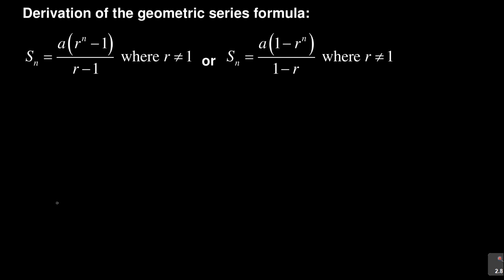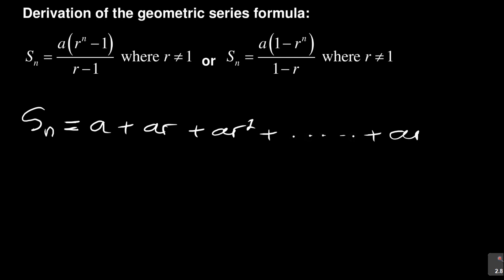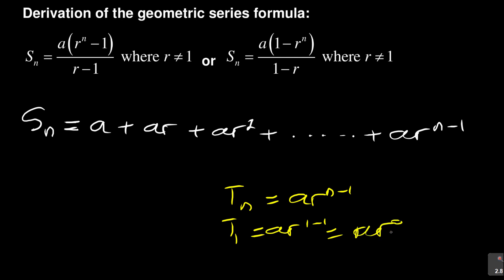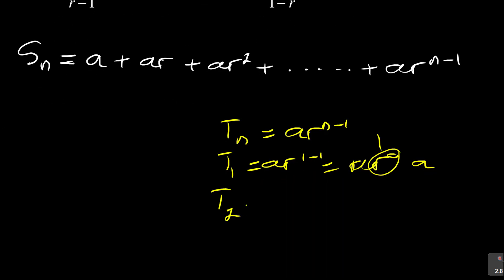The first thing I want to bring to you: you're looking at the sum of terms. For example, Sn — the sum of n terms — is equal to: the first term is a, plus ar, plus ar², and so on, plus ar^(n-1). Where does this come from? Remember, the nth term of a geometric sequence is tn = ar^(n-1). So if I say t1, it's ar^(1-1) = ar⁰ = a, since anything to the power zero equals one.